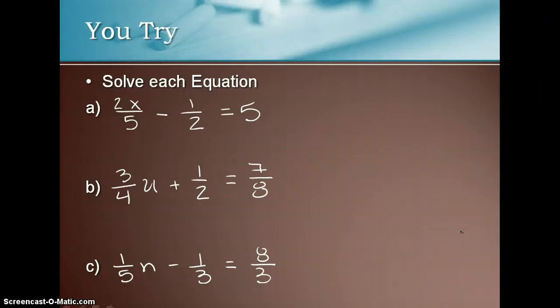For all of these ones, it is super important that you understand how the variable works. So 2x divided by 5 can actually also be rewritten as 2 fifths x, which helps you when it comes to b and c, because that means that you can take 3 fourths u and rewrite it as 3u over 4, so that when you multiply through by that common denominator, you'll multiply it to the 3, and that will hopefully cancel out with the 4, and then you'll just have something times u instead of a fraction.